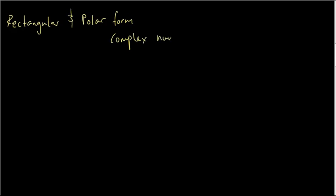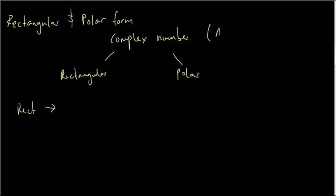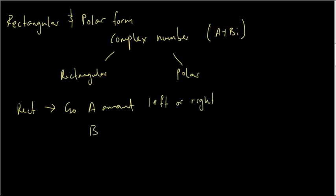Hey guys, welcome back. In this lecture I'm going to talk about rectangular and polar forms of complex numbers. A complex number can be expressed as either the rectangular form or the polar form. Rectangular form tells you how to plot your complex number on the Argand diagram using Cartesian coordinates — for example, a complex number takes the shape of a + bi, where you go a amount left or right and then b amount up or down.